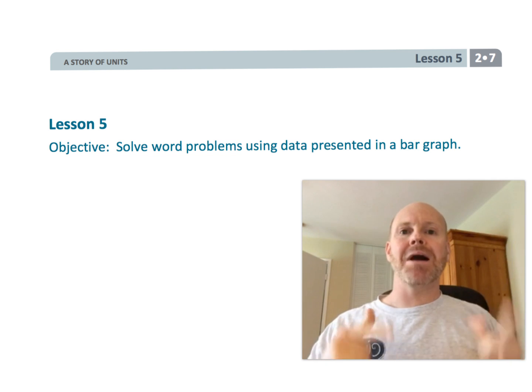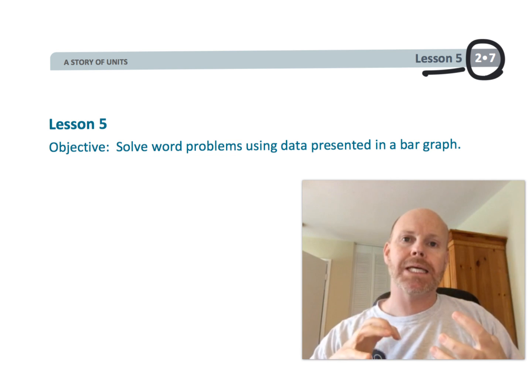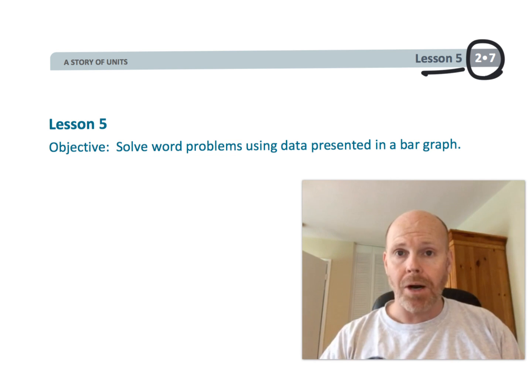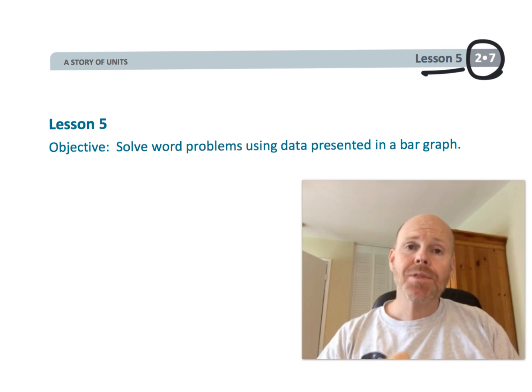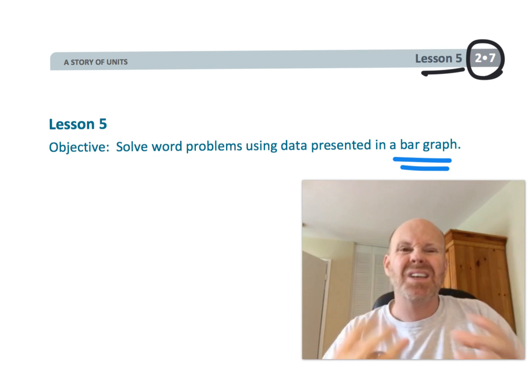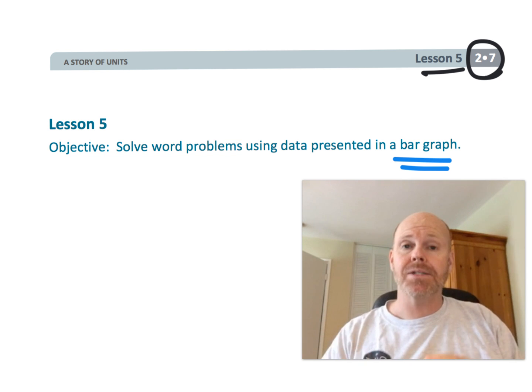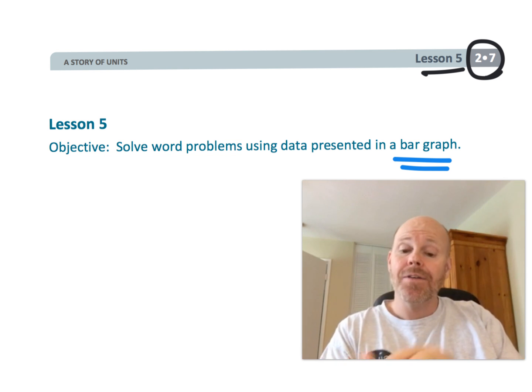All right, this is second grade module 7 lesson 5. In this lesson, students are going to be making some more bar graphs. This time in the concept development, students are going to be doing a couple of activities where they answer some questions based on already given data.